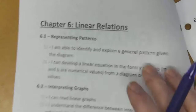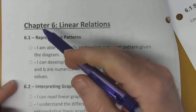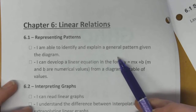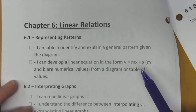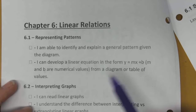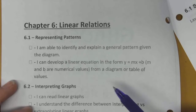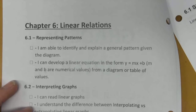On the inside front cover, you'll notice that we've got some things that you should be able to do by the time you complete each section. For 6.1 Representing Patterns, you should be able to identify and explain a general pattern given a diagram, and you should be able to develop a linear equation in the form y equals mx plus b, where m and b are numerical values — those are coefficients and constants. You'll create that from a diagram or a table of values. You can refer back to that for studying purposes.